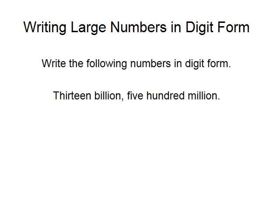The next example is to write 13,500,000,000 in digit form. The first thing you notice is there is no mention of thousands, hundreds, tens, or units. So let's go through the process anyway. We've got billions and we've got millions — they are our cue words for a gap.